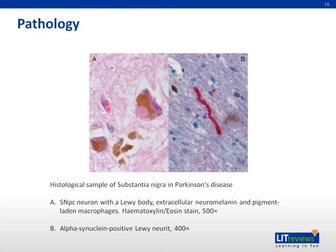In Parkinson's disease, there is loss of melanin-containing dopaminergic neurons in the substantia nigra, locus coeruleus, and dorsal motor nucleus of the vagus nerve. There are also eosinophilic intracellular cytoplasmic inclusions known as Lewy bodies in the brainstem and other parts of the brain. The end result is dopamine deficiency in the nigrostriatal pathway and relative hyperactivity of the striatal cholinergic activity.